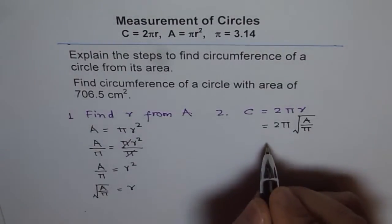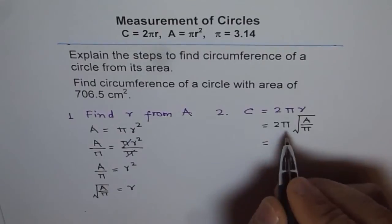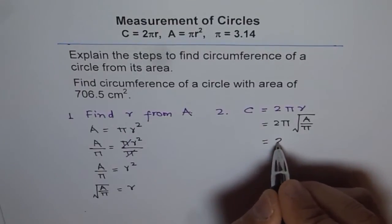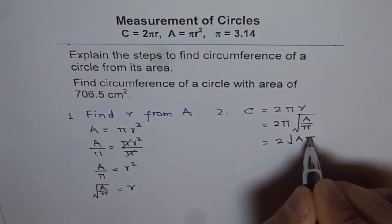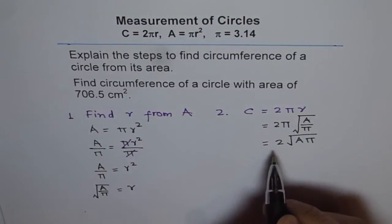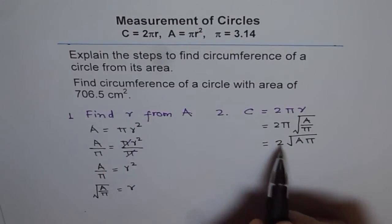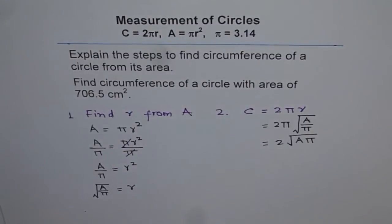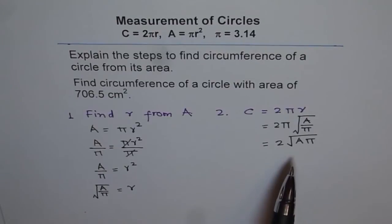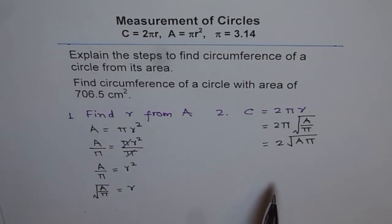This can also be reduced to 2 times the square root of A times π. For a grade 8 level student I will not go further — I will stop here. It is good to do numbers; it is easier to work with numbers. Let me show you how to do the problem using this formula.